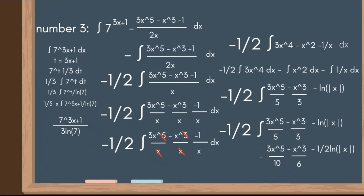Now for the second part: the negative integral of (3x⁵ - x³ - 1/(2x))dx. We use the property of integrals and factor out 1/2, giving us negative 1/2 times the integral of (3x⁵ - x³ - 1/x)dx. We separate this into three fractions: negative 1/2 times the integral of (3x⁵/x - x³/x - 1/x)dx, which simplifies to negative 1/2 times the integral of (3x⁴ - x² - 1/x)dx. Using the property of integrals, we separate into three integrals.